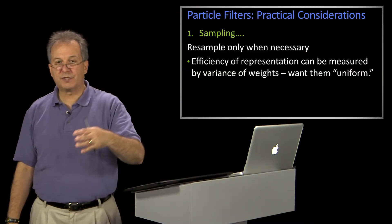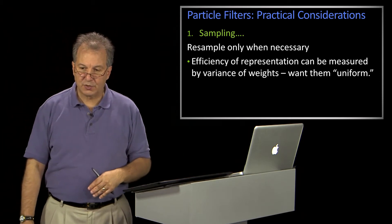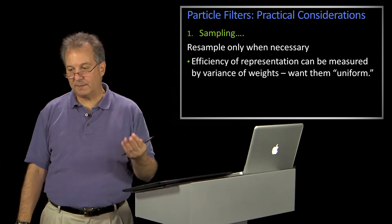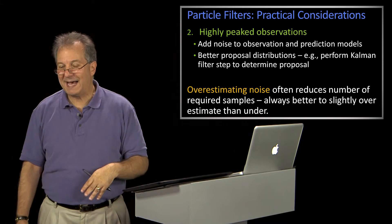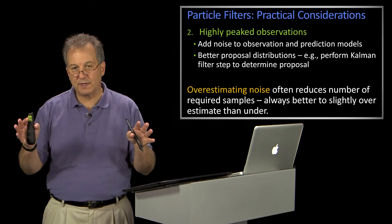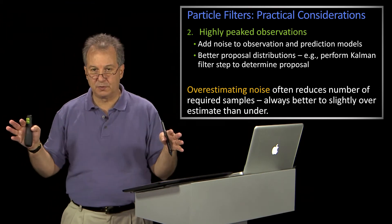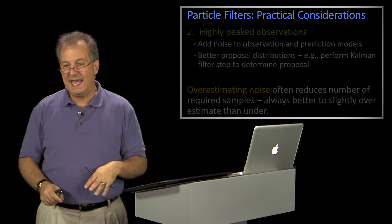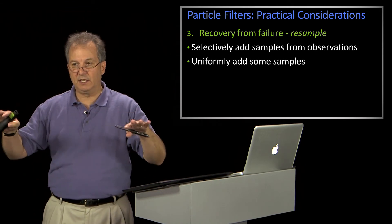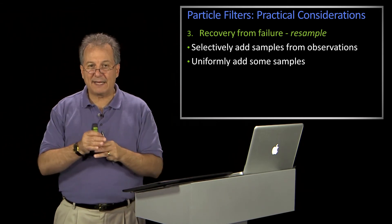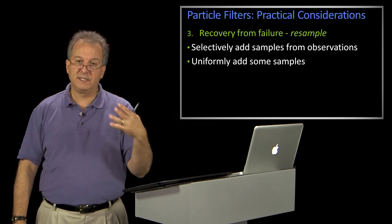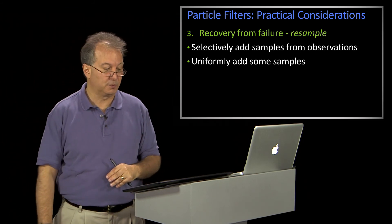So those three issues — making sure you're smart and efficient about your resampling, not letting your system think that measurements are too precise and making sure you have enough noise so you don't kill off samples too quickly, and having some random samples distributed in a useful way so you can track things if they change very unexpectedly — all these things are necessary to make particle filtering work.